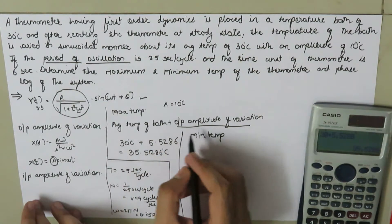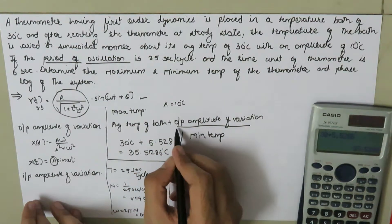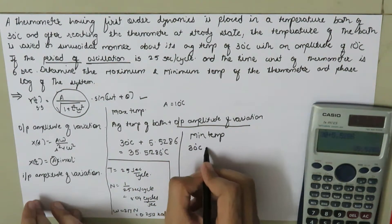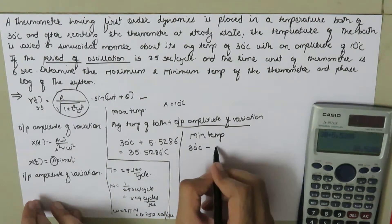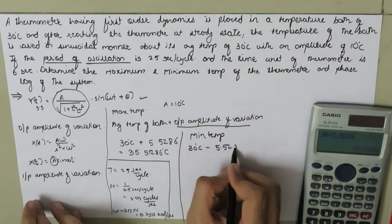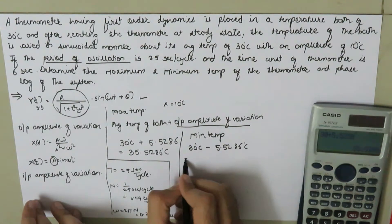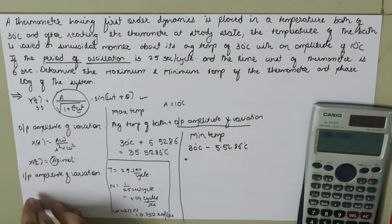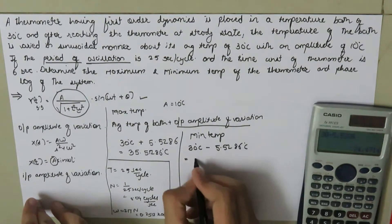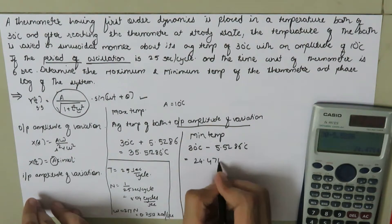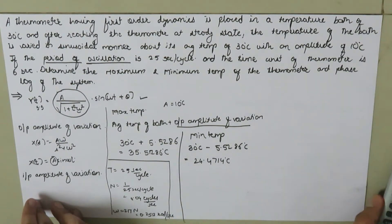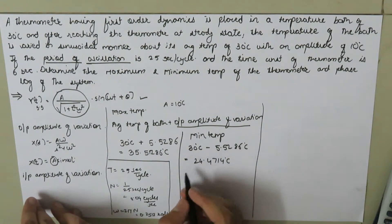The minimum temperature equals the average temperature of the bath minus the output amplitude of variation. This is 30 degrees Celsius minus 5.5286 degrees Celsius, which gives a minimum temperature of 24.4714 degrees Celsius.